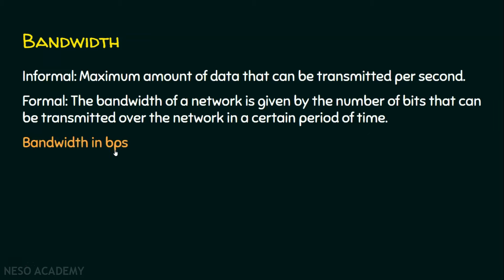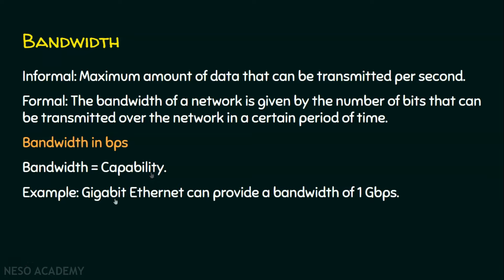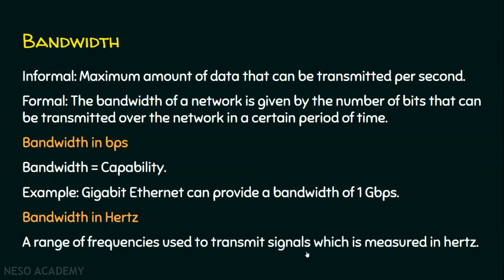Bandwidth in bits per second represents the capability. For example, if we are deploying Gigabit Ethernet for our network, then Gigabit Ethernet can provide a bandwidth of one gigabit per second, meaning one gigabit of data can be transmitted per second over this channel. For wireless, bandwidth is defined as a range of frequencies used to transmit signals, and it is measured in hertz.